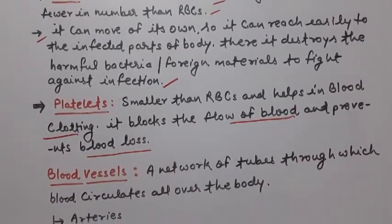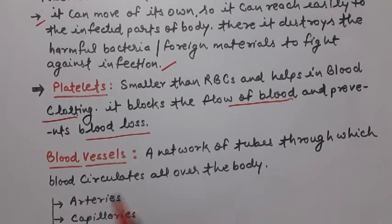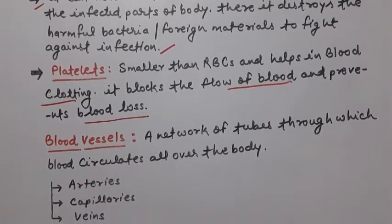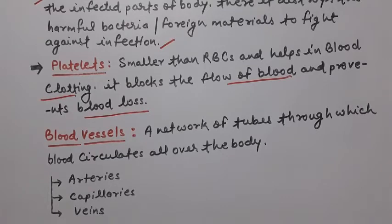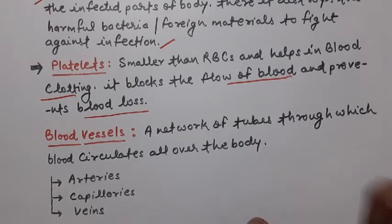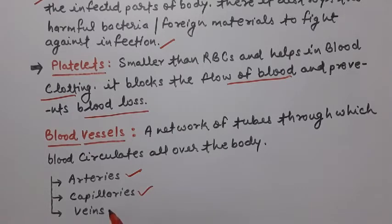Next, about blood vessels — a network of tubes through which blood circulates all over the body. There are three types of blood vessels: arteries, capillaries, and veins.